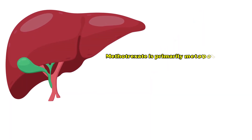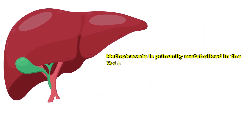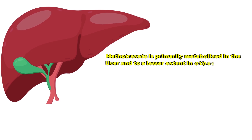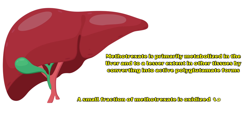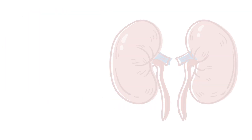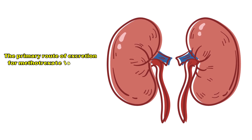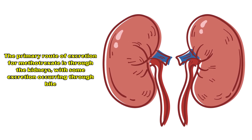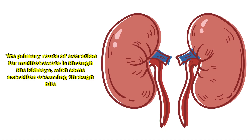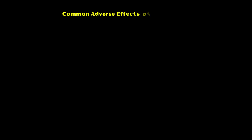Methotrexate is primarily metabolized in the liver, and to a lesser extent in other tissues, by converting into active polyglutamate forms. A small fraction of methotrexate is oxidized to 7-hydroxymethotrexate. The primary route of excretion is through the kidneys, with some excretion occurring through bile.